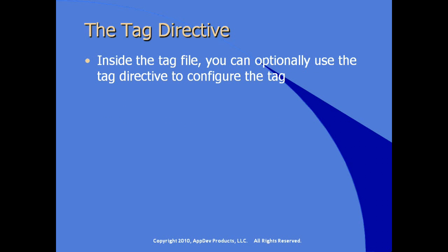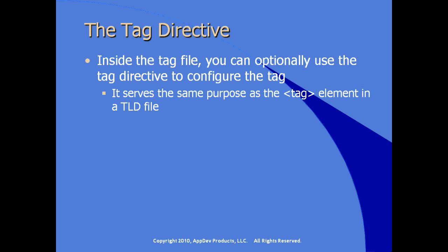Optionally, inside the tag file you can add additional features using the tag directive to configure the tag. It serves the exact same purpose as the tag element in the TLD file. For example, in the tag directive you can set the display name attribute and the body content attribute — exactly the same as in the TLD file, which is normally constructed by the Java developer. Now we're letting the JSP developer extend their skills to provide configuration and extend the UI, written in JSP syntax with JSP tags.